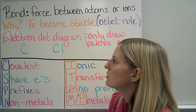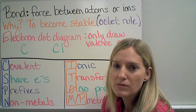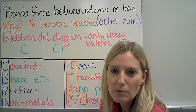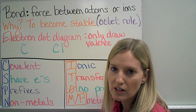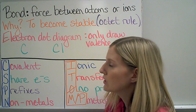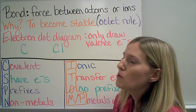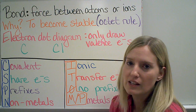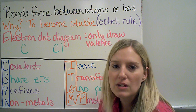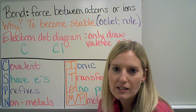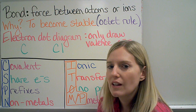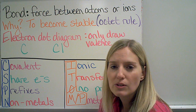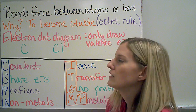One way that we show these atoms is with electron dot diagrams. This is a little bit different than the Bohr models we used in our last chapter. In an electron dot diagram, we only have to draw the valence electrons. We put the symbol in the middle, which represents the protons and the neutrons, and any of the electrons that are not valence electrons. The only dots we draw are valence electrons.